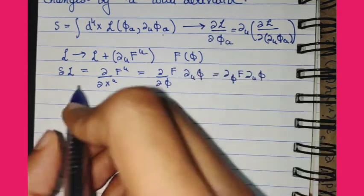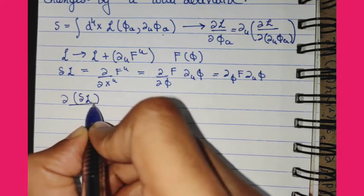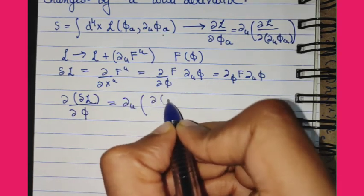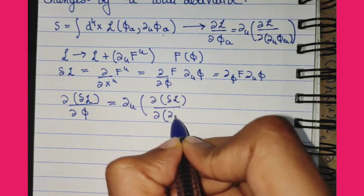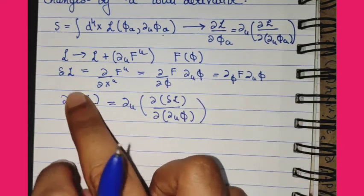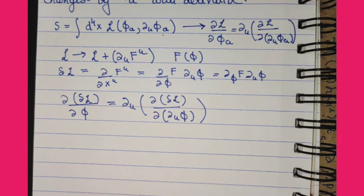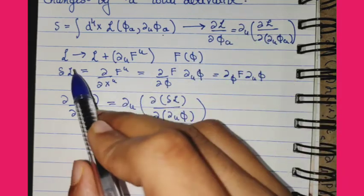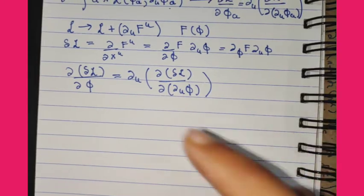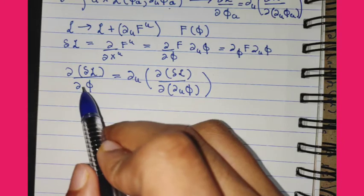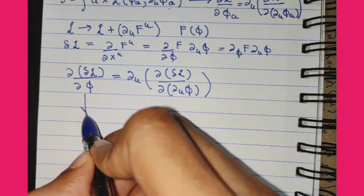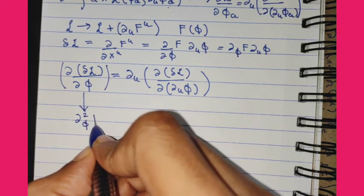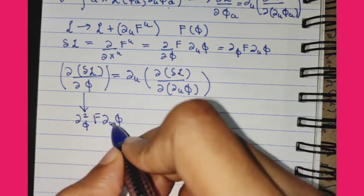The equation of motion will be unchanged if we can show that certain terms are equal. Let's calculate this particular object. If we evaluate the first part, we get del^2 phi times del_phi F over del_mu phi, because del_mu phi and phi are independent.